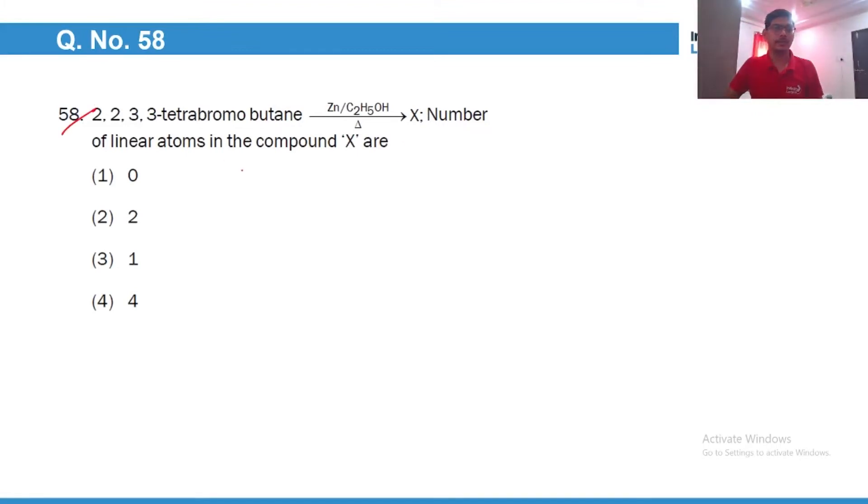In question number 58, the reactant is 2,2,3,3 tetrabromo butane. On heating with zinc, debromination occurs and we get two pi bonds here, and the product is butyne. And you must know that the hybridization of the triply bonded carbon atom is sp, so the bond angle is 180 degrees. So all these four carbon atoms are linear. So the correct answer is this one.